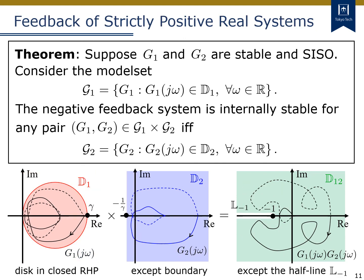Extending this idea, we can also consider the case where the model set of G1 is described by the red disk D1 in the right half-plane. In this case, the compatible domain of G2 is obtained as the blue domain D2, which gives the domain D12 shown in this figure. Please note that D12 does not include the half-line L-1 from the point minus 1, so any Nyquist curves of G1 times G2 cannot encircle the point minus 1. In fact, as stated in the theorem, this D2 is the largest possible domain such that the feedback system of G1 and G2 is internally stable, given that the domain of G1 is the red disk.